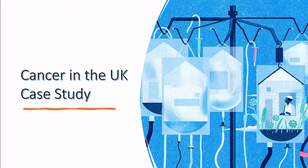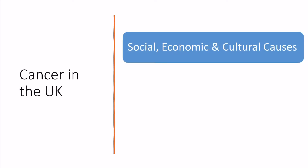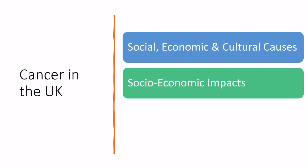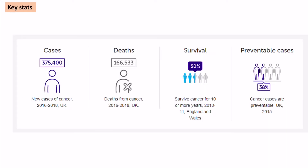In this video we're going to look at the cancer in the UK case study. This is for the OCR A-level spec in which you need to know a case study of one non-communicable disease. In the case study we're going to look at the social, economic and cultural causes, the impacts that it has on people and money, and the strategies being used by the UK government to try and mitigate this disease.